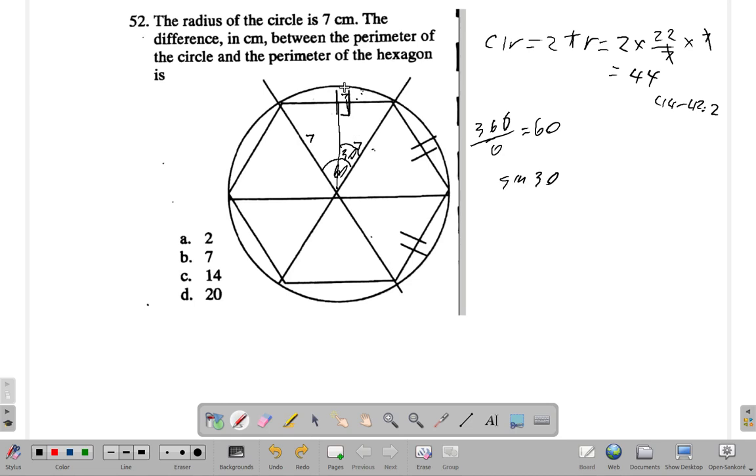The sine of this is the opposite, which is this length, divided by the hypotenuse, which is our 7 here. Sine 30 is the opposite divided by 7. So the opposite would be 7 times sine 30.